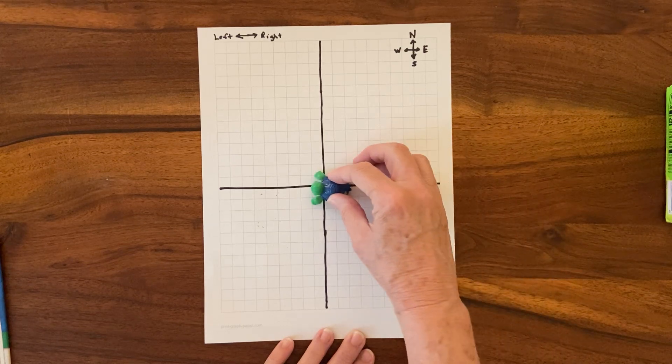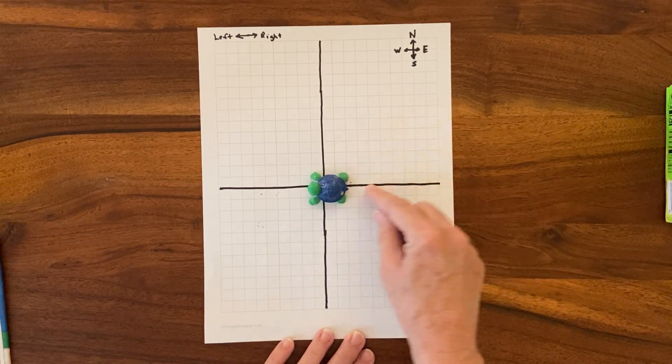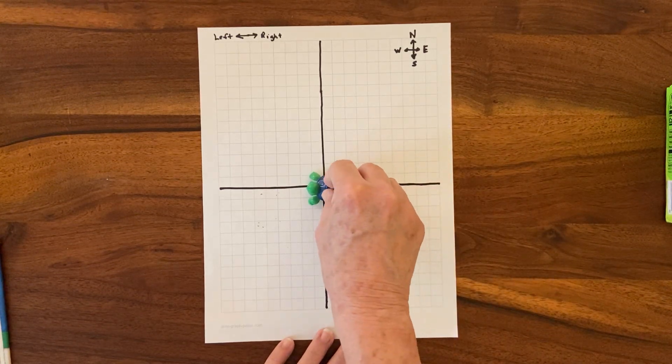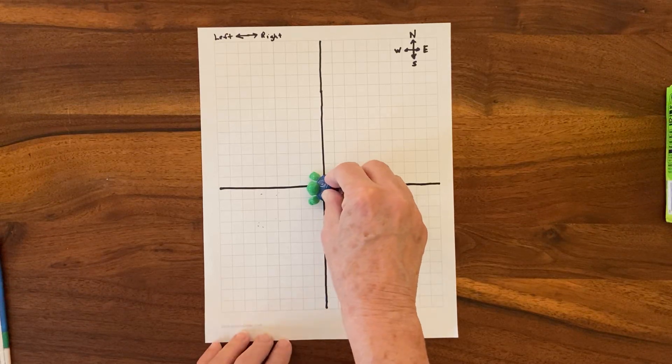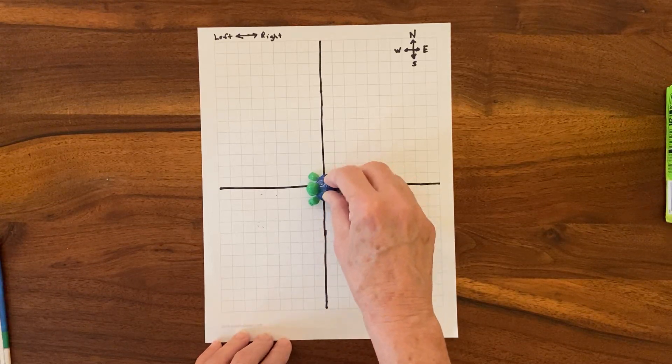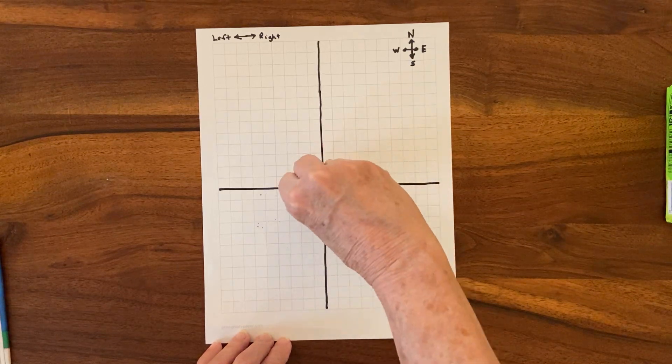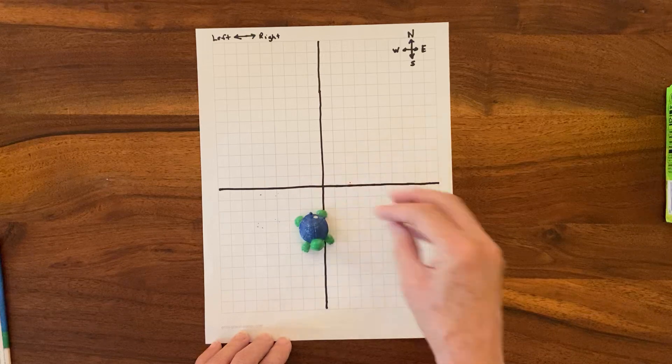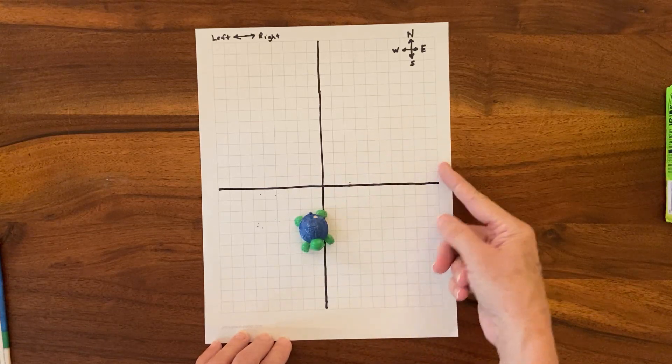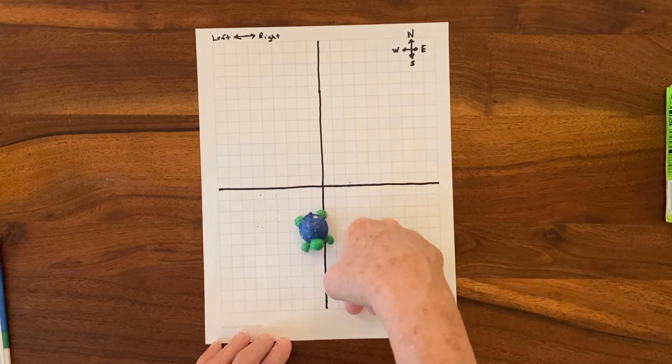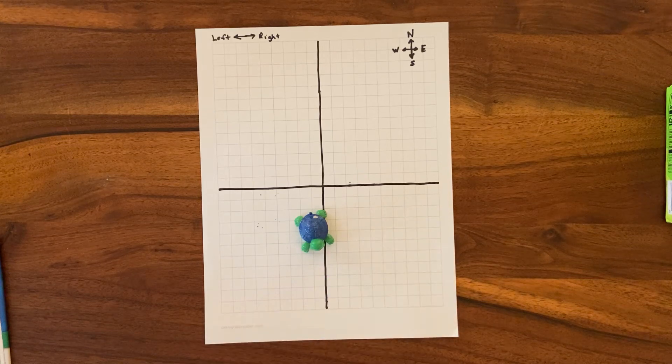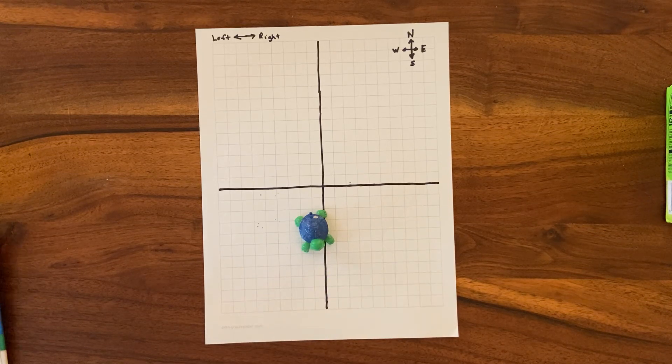She traveled one block, she's sped up, to the next intersection. At the intersection, she turned 90 degrees to the left. Remember, this is her little left flipper, so she's going to turn that way. Which direction is she traveling now? South, right.